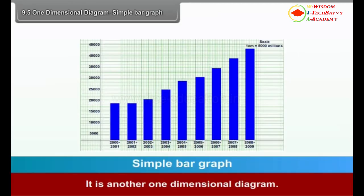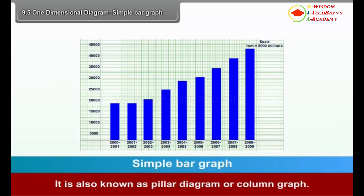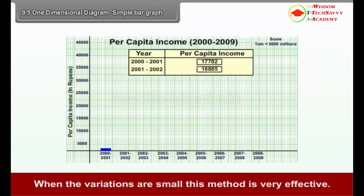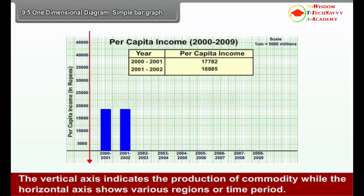Simple Bar Graph: It is another one-dimensional diagram, also known as a pillar diagram or column graph. The height of the bar is proportional to the value of an element. When the variations are small, this method is very effective. The vertical axis indicates the production of a commodity while the horizontal axis shows various regions or time periods.